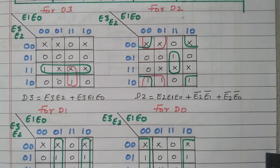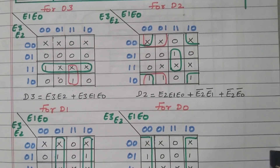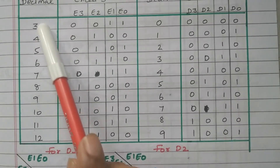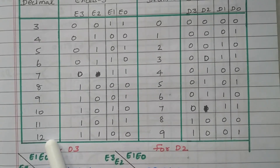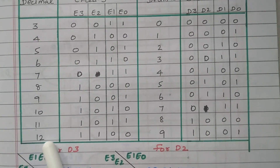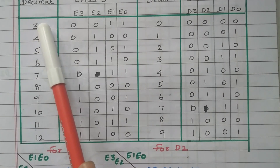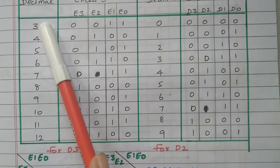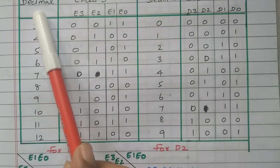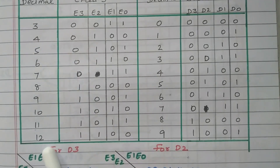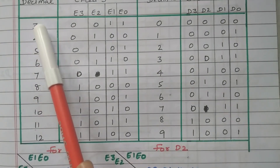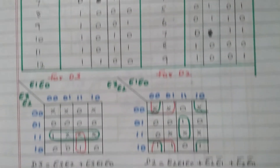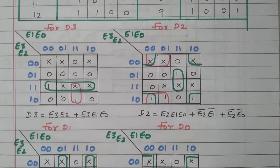The XS3 code starts from 3 to 12 only. Values 13, 14, and 15 are not available, and similarly 0, 1, and 2 are not available — so nearly 6 combinations are don't care conditions: 3 at the top (0, 1, 2) and 3 at the bottom (13, 14, 15). These 6 are marked as don't care conditions using the min term representation 0 through 15.